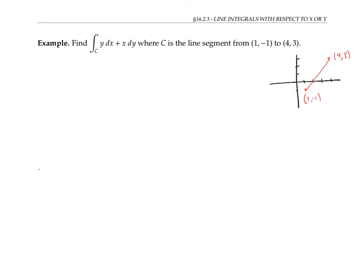There are many ways to parameterize the line segment, but a natural parameterization is to let x of t be 1 plus 3t, and y of t be negative 1 plus 4t. I came up with those parameterizations by starting at the first point where x is 1 and y is negative 1, and then looking at how fast x has to go to travel between its first value of 1 and its last value of 4.